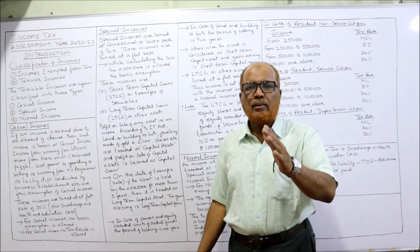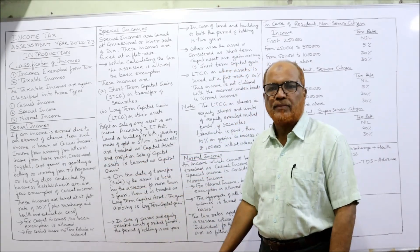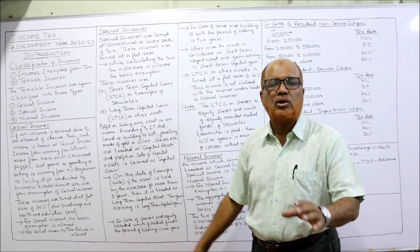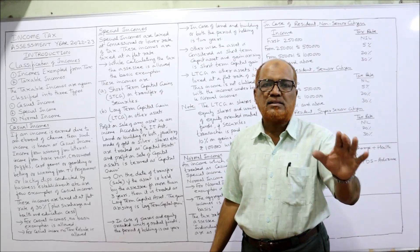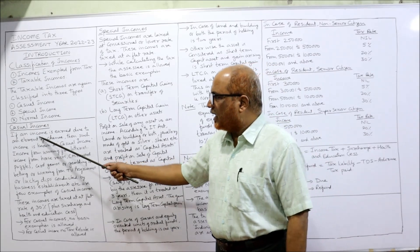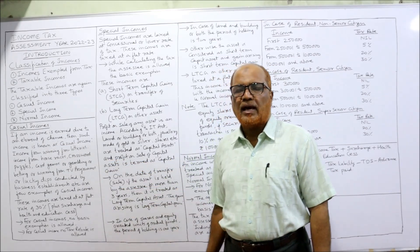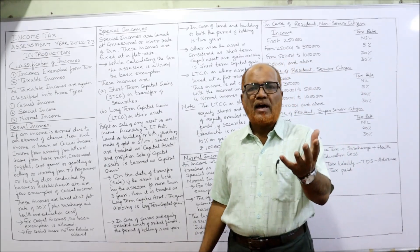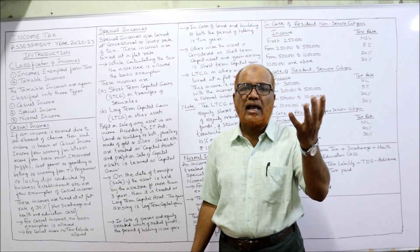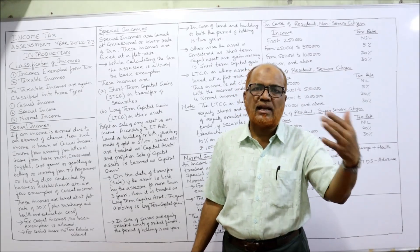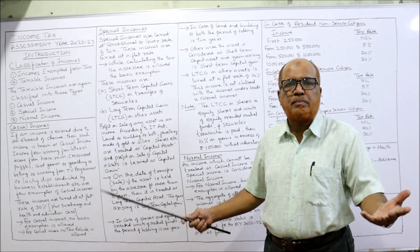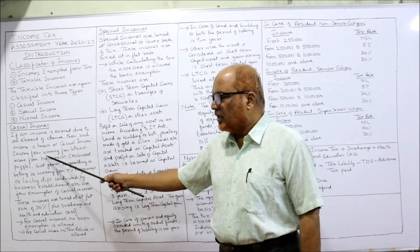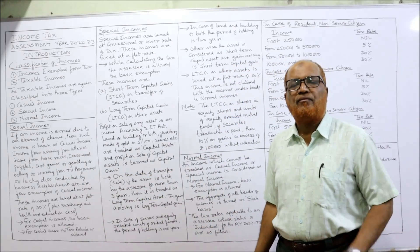First, casual income — this concept is very important and is frequently asked in examinations. If an income is earned due to an element of chance, it is unexpected and non-recurring. If an income is received with an element of chance and luck, and it is non-recurring and unexpected, it is called casual income.